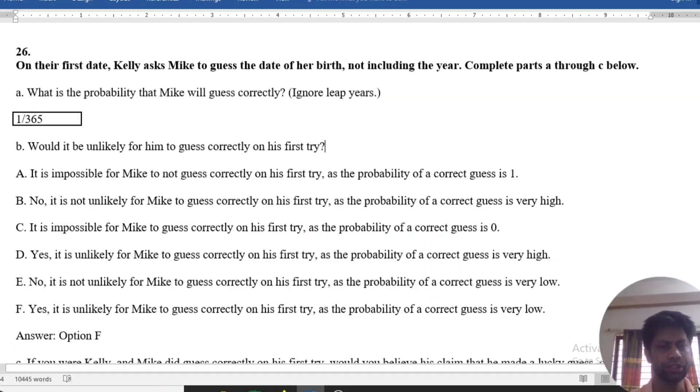On the first date, Kelly asked Mike to guess the date of her birth, not including the year. Complete parts A through C below.